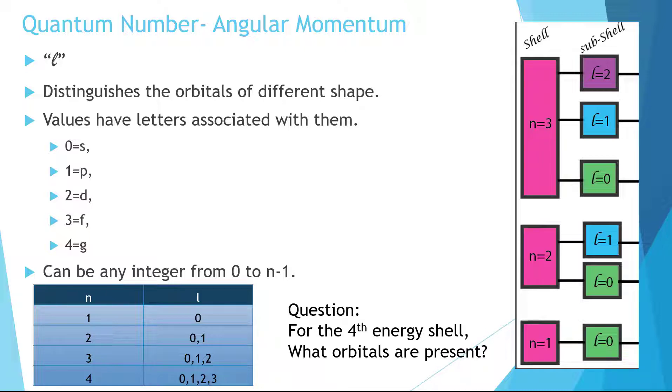Let's do one quick example. What orbitals are present for the n equals four energy level? Well, l is allowed to equal zero up to n minus one. So if n is equal to four, then that would mean that l is allowed to equal zero, one, two, or three. Or in other words, that in the fourth energy level, it has s, p, d, and f orbitals.